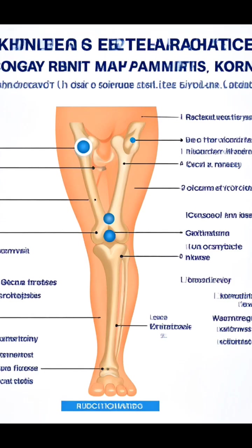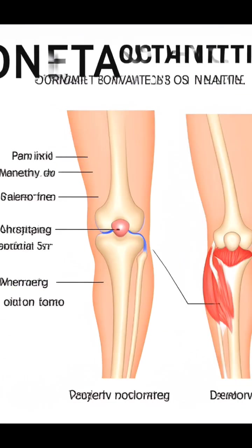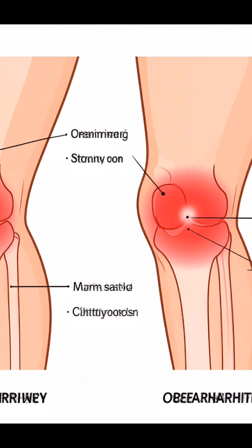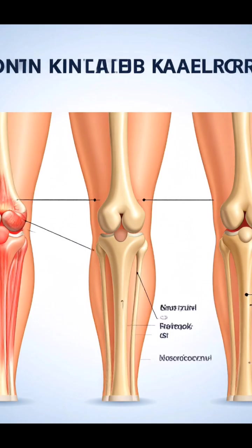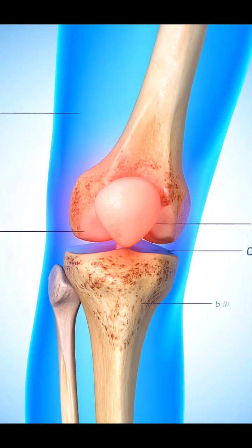What is knee osteoarthritis? Knee osteoarthritis is the gradual erosion of the cartilage that covers the ends of the bones in the knee joint. This cartilage acts as a smooth layer that allows joint movement and prevents bone friction. When it wears away, bones begin to rub against each other, causing pain, stiffness, and limited mobility. It is one of the most common types of arthritis, especially in the elderly, but it can also affect younger people due to several contributing factors.